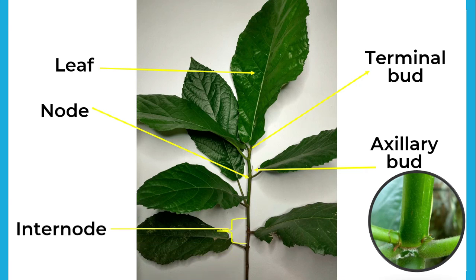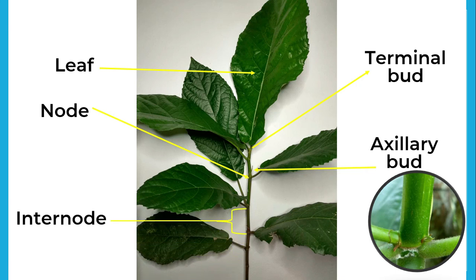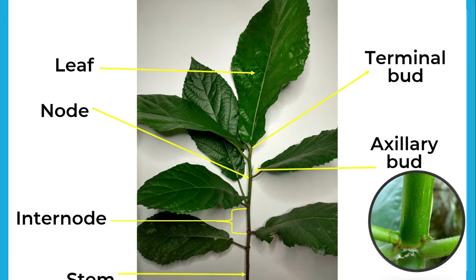And we have what we call the internode, which is responsible for the elongation of the stem and links the nodes of a plant together. It is located between two nodes. Lastly, the stem is the main support system of a plant.